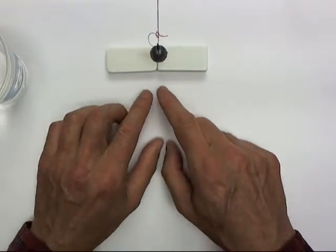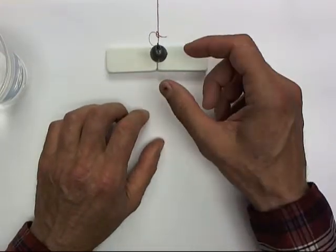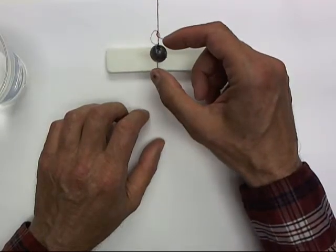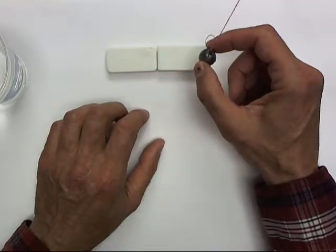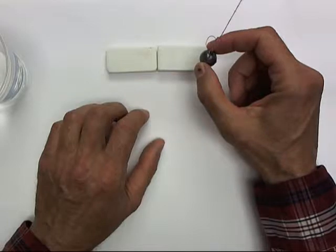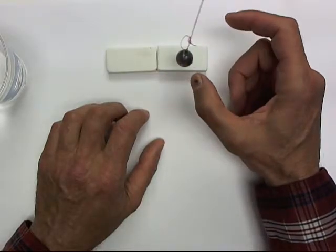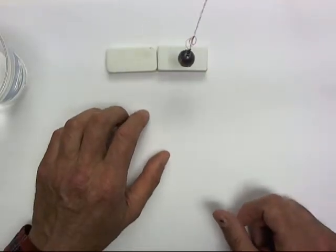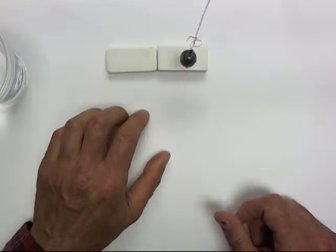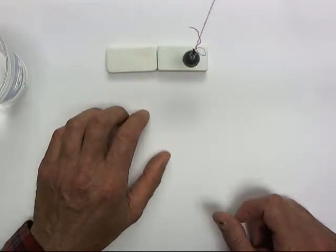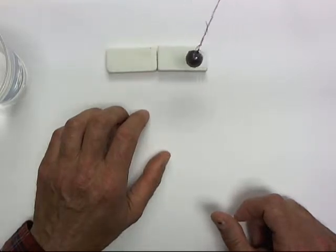Our pendulum is hanging at equilibrium, swaying slightly because there's a little bit of air circulation in here. If I bring the pendulum back and release it, it oscillates back and forth, and it doesn't appear to be losing energy very quickly.